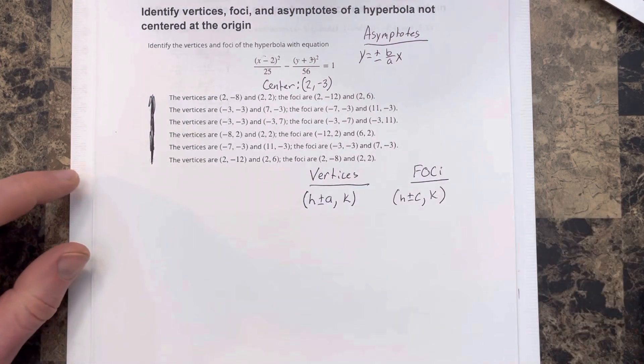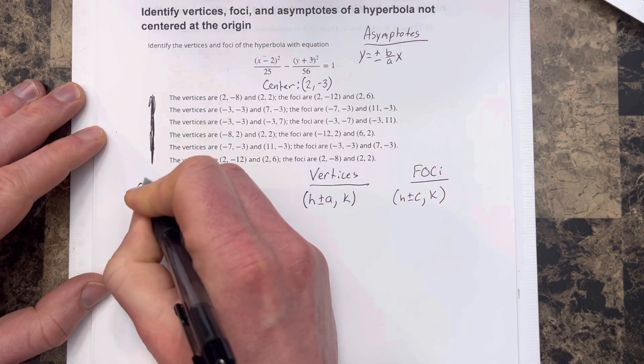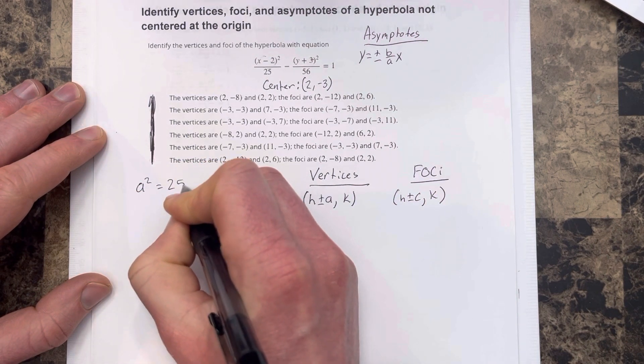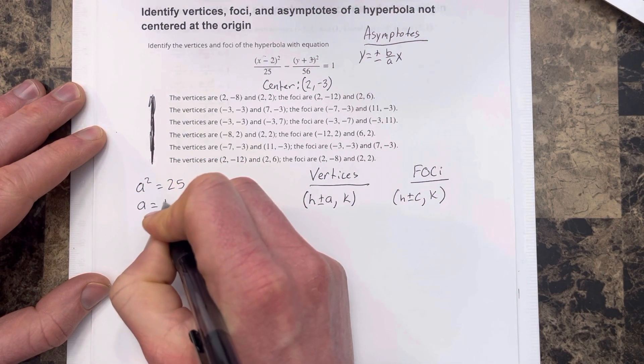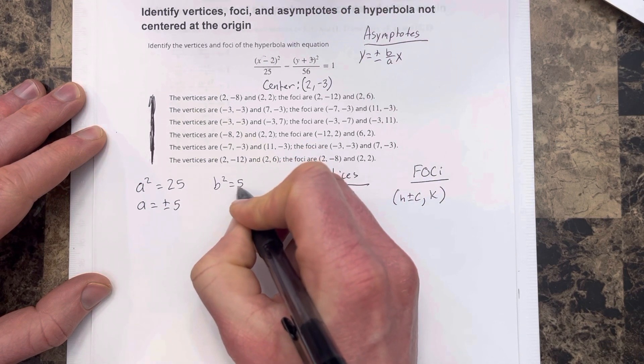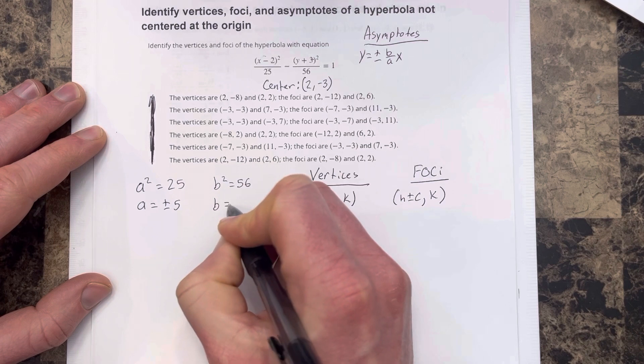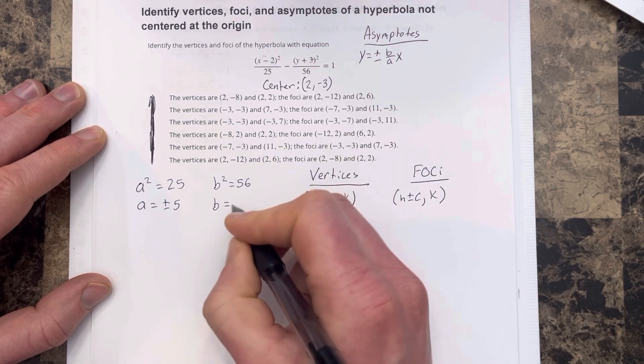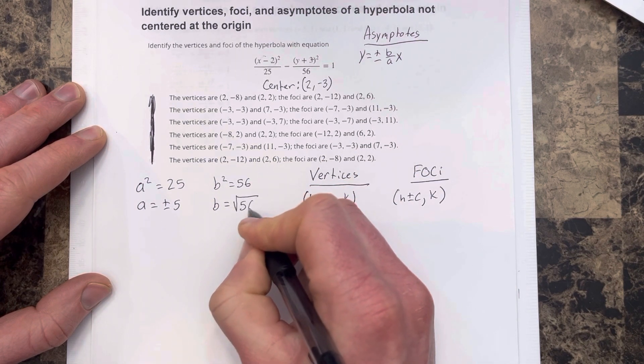Now that we have all that written down, we can say that a squared is equal to 25, which means a is equal to plus or minus 5. b squared is equal to 56, which makes b equal to root 56.